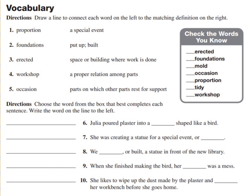Number six: Julia poured plaster into a blank shape like a bird. Number seven: She was creating a statue for a special event or blank. Number eight: We blank, or built, a statue in front of the new library. Number nine: When she finished making the bird, her blank was a mess. Number ten: She likes to wipe up the dust made by the plaster and blank her workbench before she goes home.